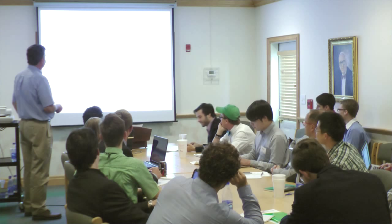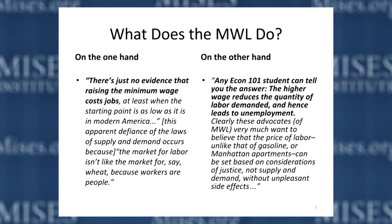This is obviously someone thinking at a very high level. On the other hand, we have people who will say any Econ 101 student can tell you the answer — the higher wage of the minimum wage law reduces the quantity of labor demanded and hence leads to unemployment. Clearly, advocates of minimum wage laws very much want to believe that the price of labor, unlike that of commodities such as gasoline or Manhattan apartments, can be set based on considerations of justice, not supply and demand, without unpleasant side effects — and the unpleasant side effect is unemployment.